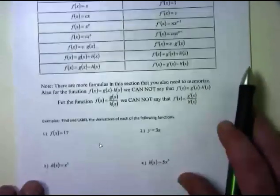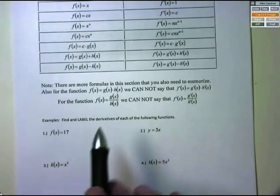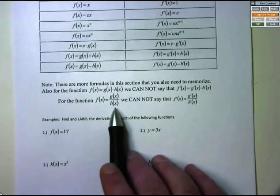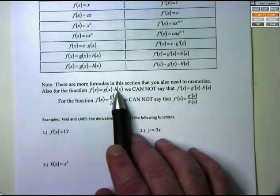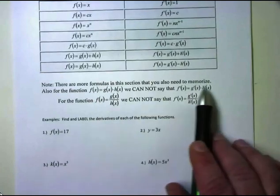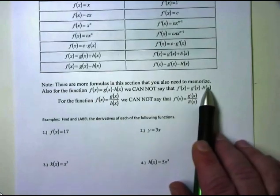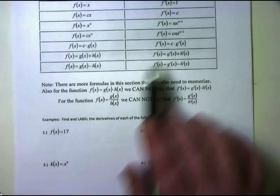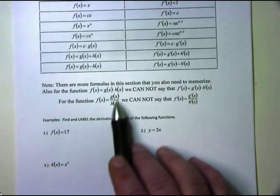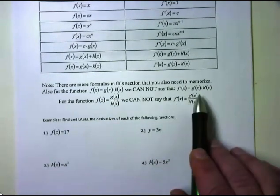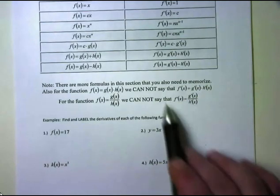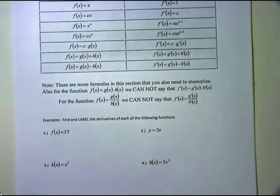However, a little special note: if f(x) equals g(x) times h(x), we can't just take the derivative of each term like we did with sums. And if we have a quotient g(x) over h(x), we cannot say f′(x) equals g′(x) over h′(x). These will require special formulas that you'll see in the next video.